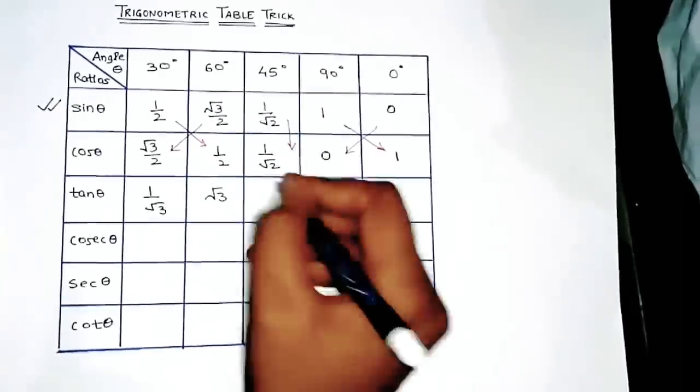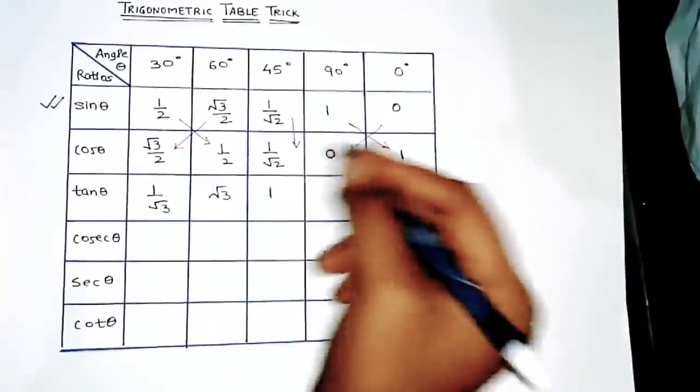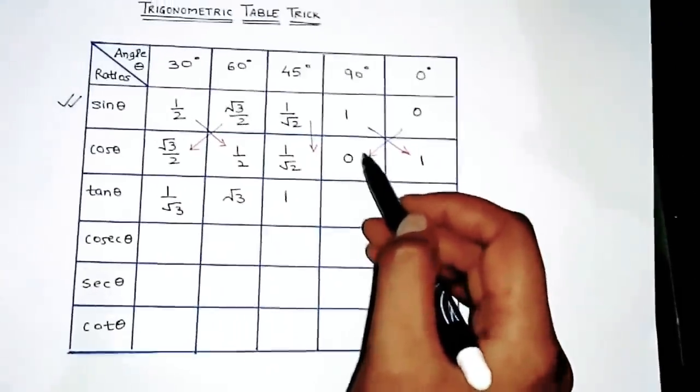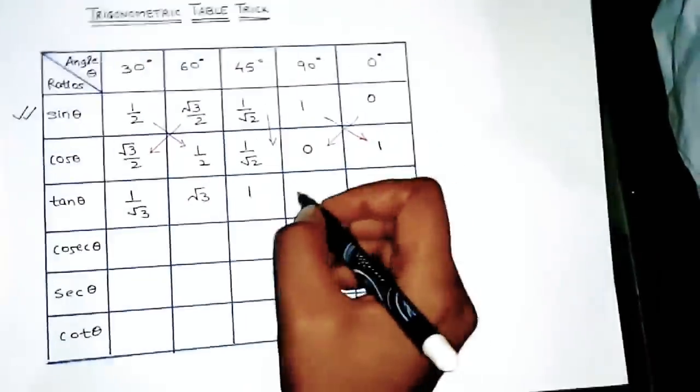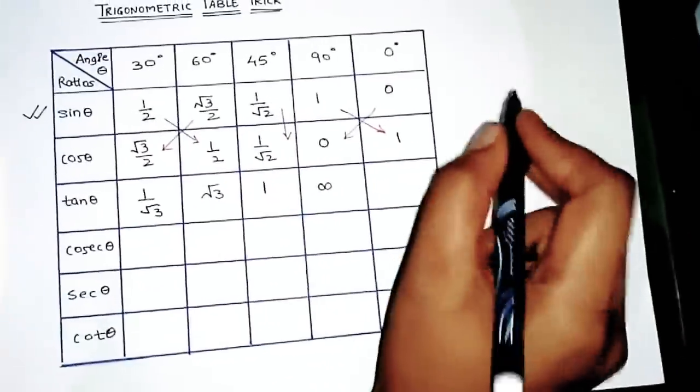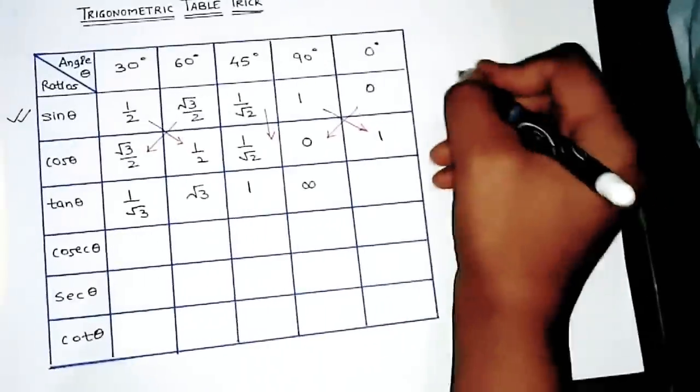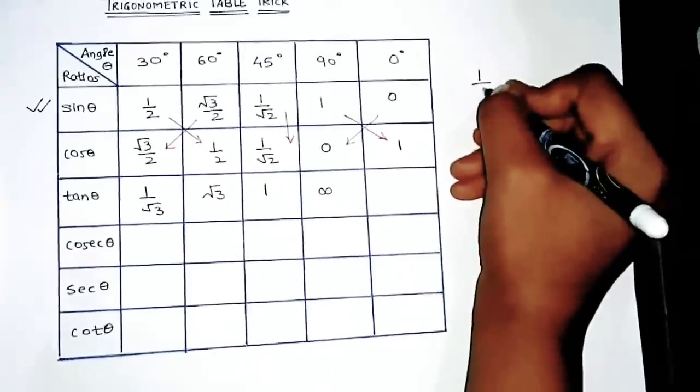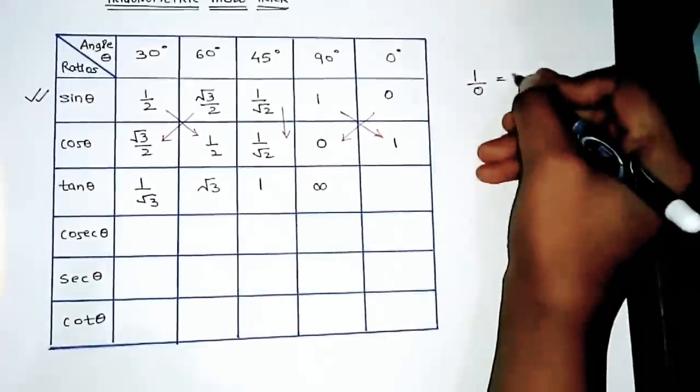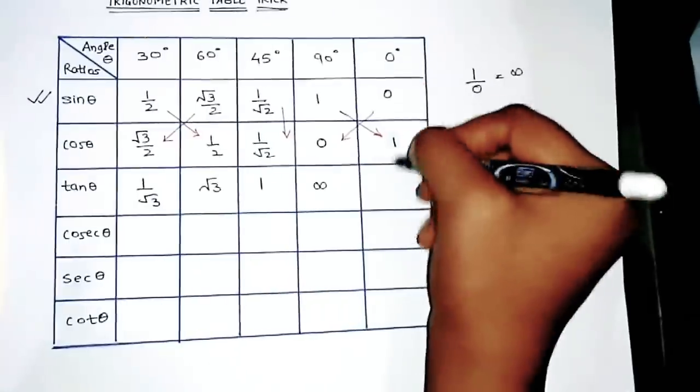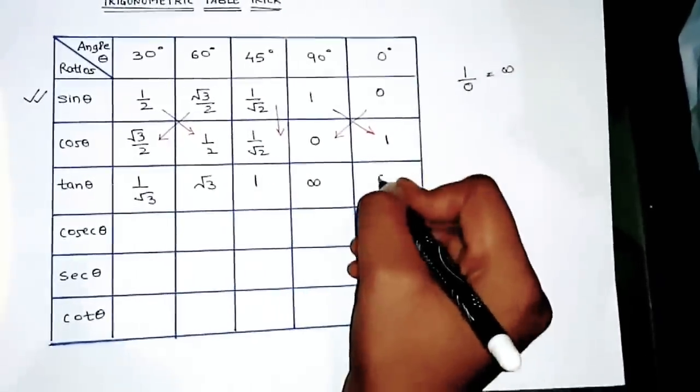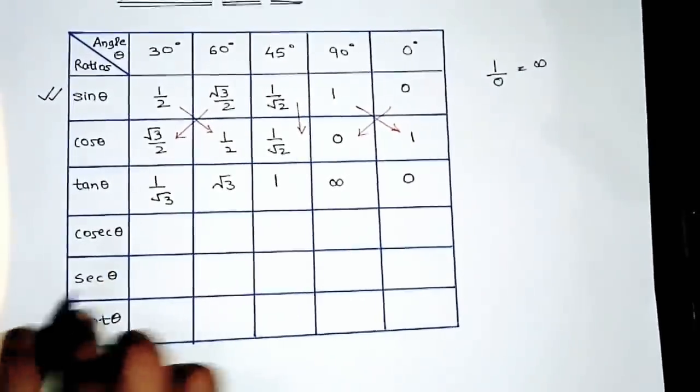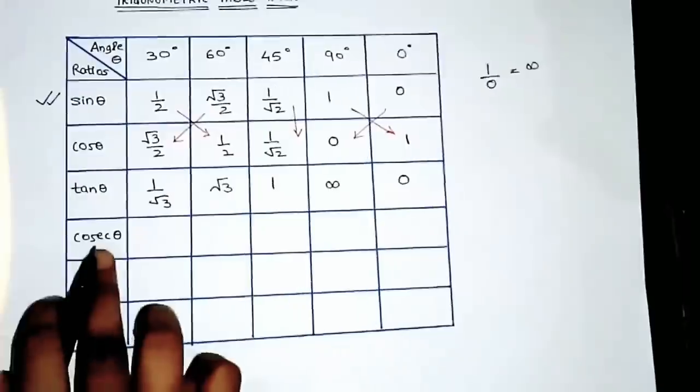For 45, your √2 cancels, so 1 upon 1 you get 1. Tan 90, now 1 upon 0. So friends, what is 1 upon 0? It is always infinity. Okay, so 1 upon 0 is infinity. Here I'll write one side so that you can remember: 1/0 = ∞.